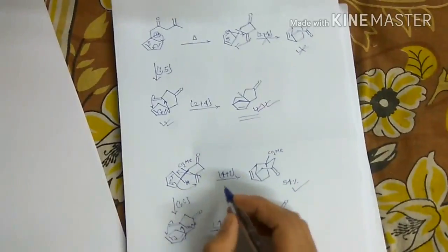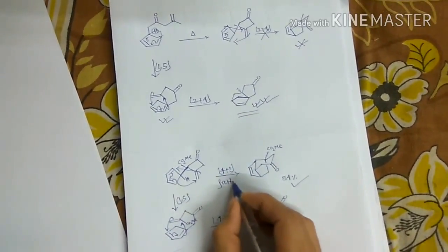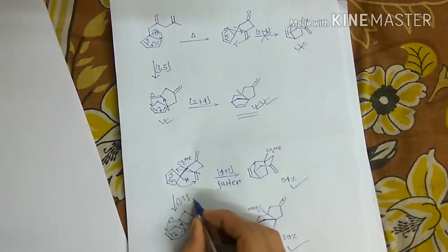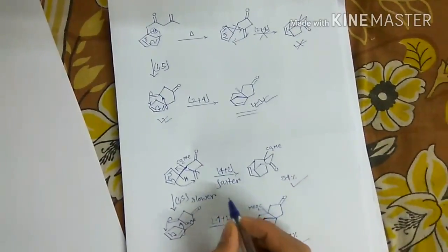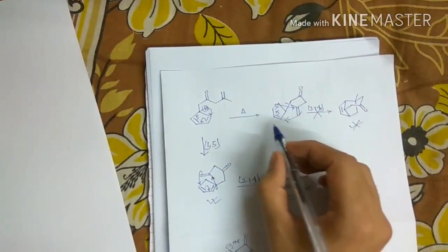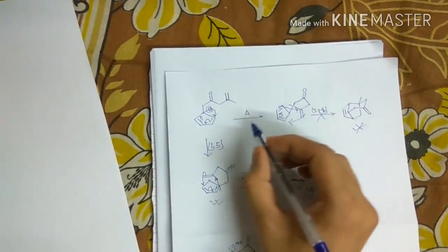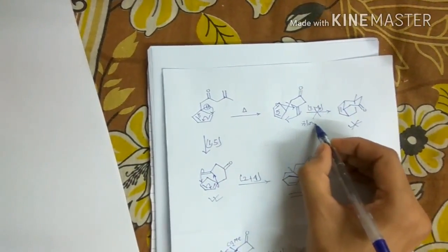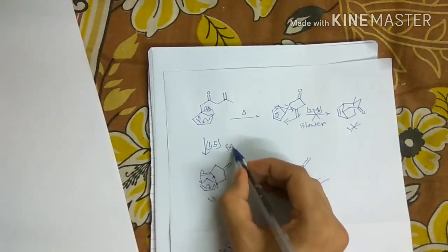So here this is faster. This is slower. For this CO2Me group. Whereas in this case, this is slower. And this is faster.